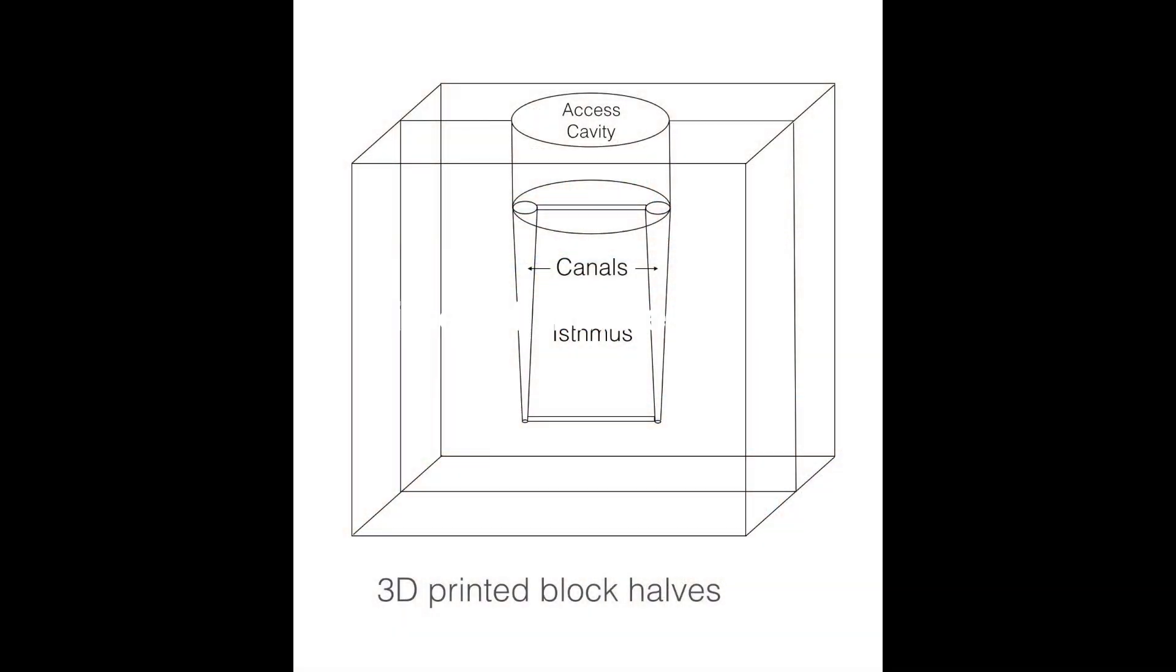This in vitro investigation was done in 3D printed block halves. They were CAD modeled with an access cavity, canal on either side of that access cavity, and an isthmus space between them. The isthmus space being 0.1 to 0.15 millimeters thick.